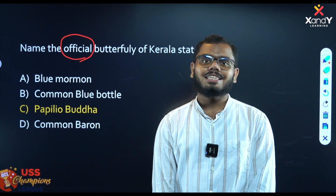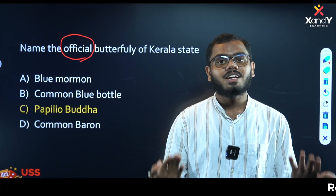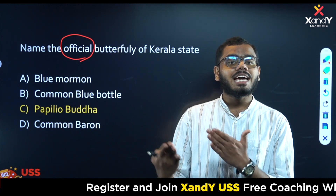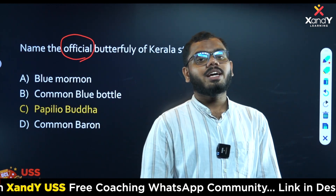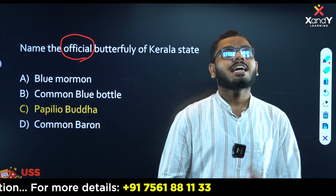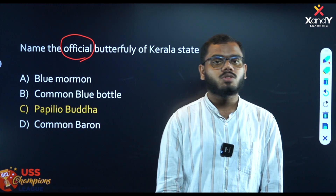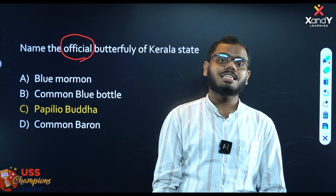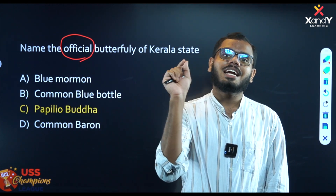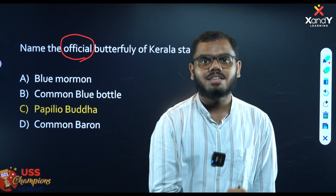In Kerala, there are official symbols — an official flower, an official butterfly, and official showcase. There is also a national flower, national bird which is the peacock, and Kerala's official animal which is the Ganga River Dolphin. You can find all these official symbols by searching on Google or checking your notes.